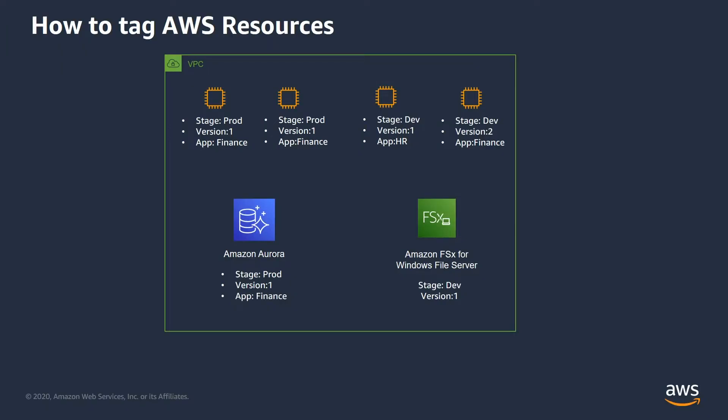You have a lot of resources in AWS — EC2 instances, databases, S3 buckets, Amazon FSx Windows file servers to name a few. You can attach an arbitrary key-value pair. I have some set of keys defining the EC2 instances, where you have a key like stage, version, app, and I've given the values for those. What we need is some kind of a mechanism to group these resources based on these tags.